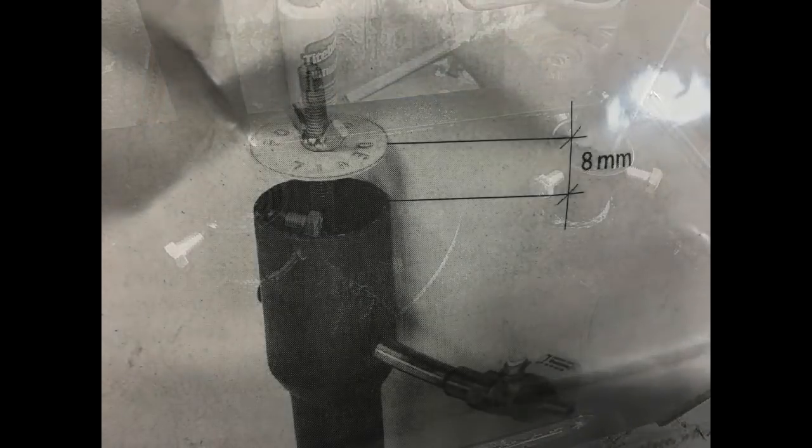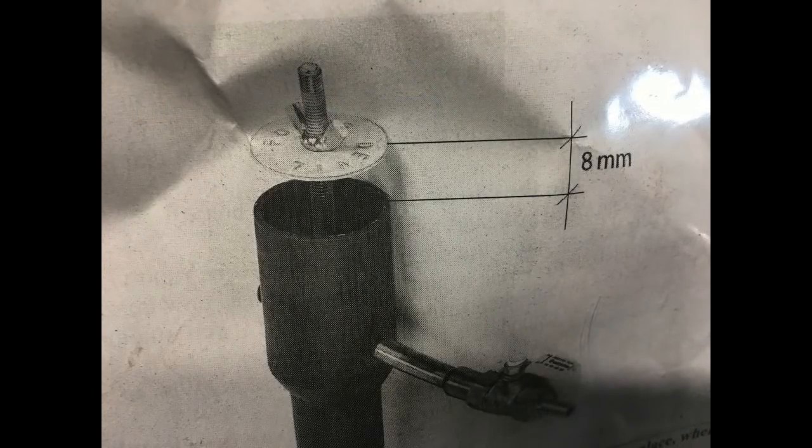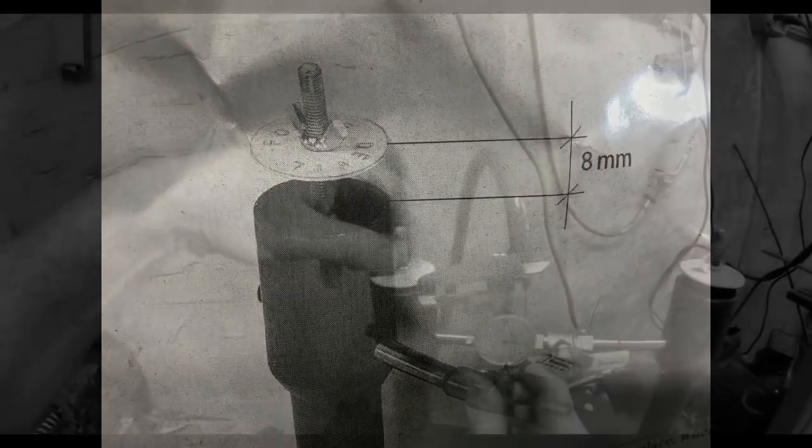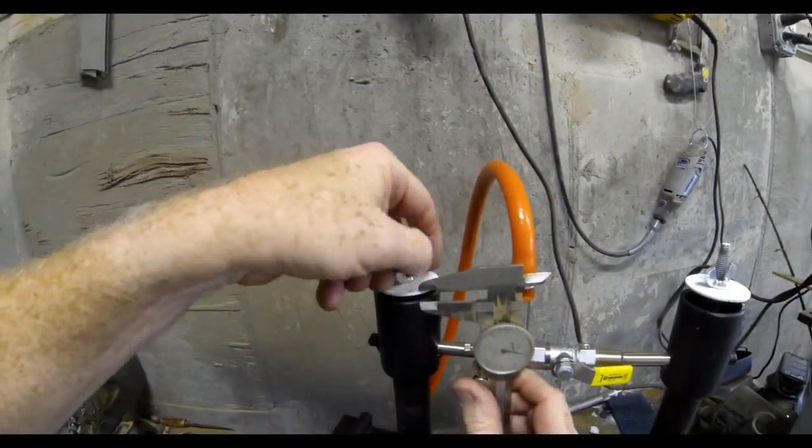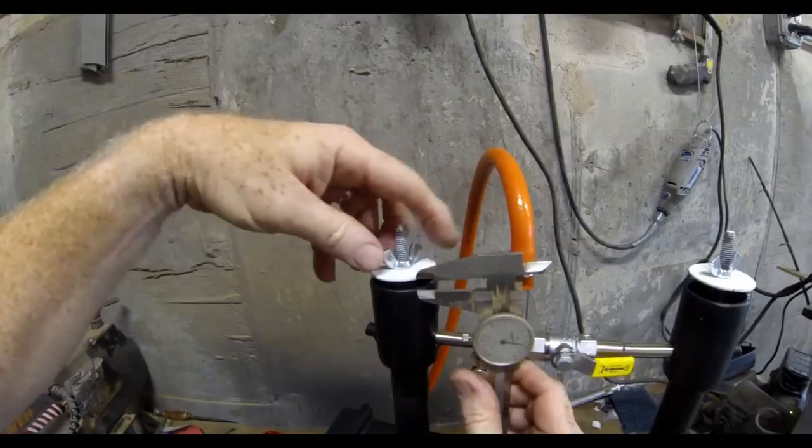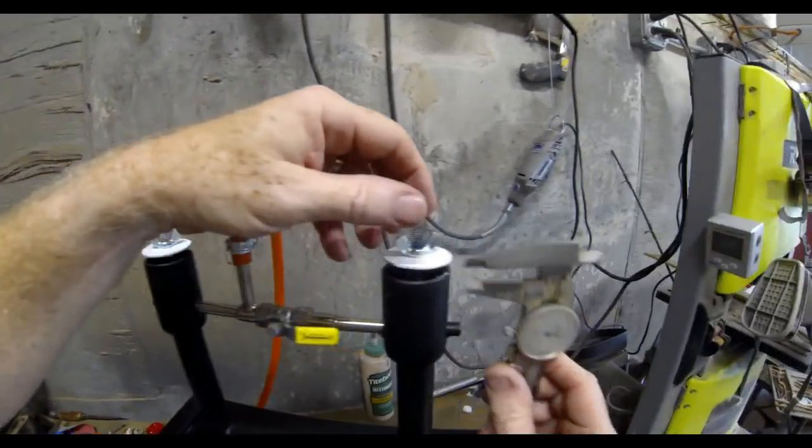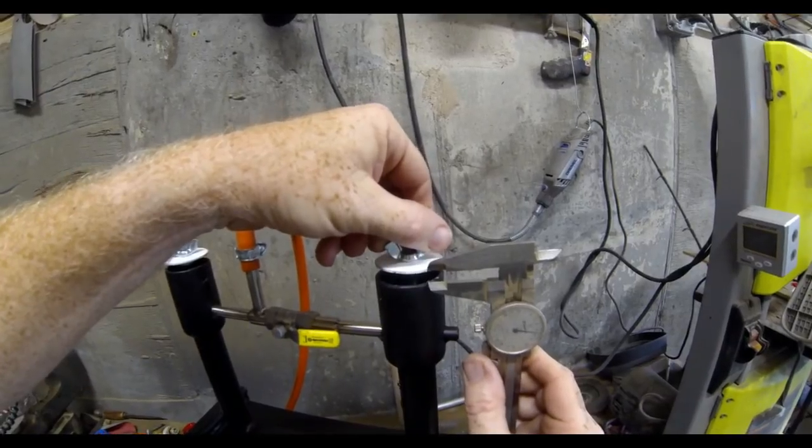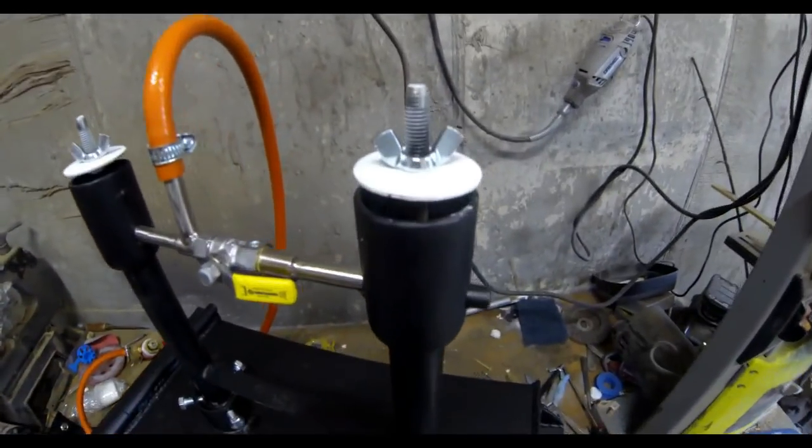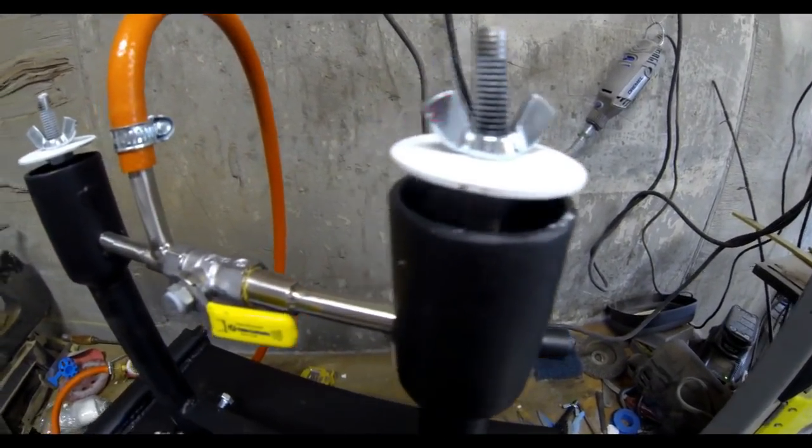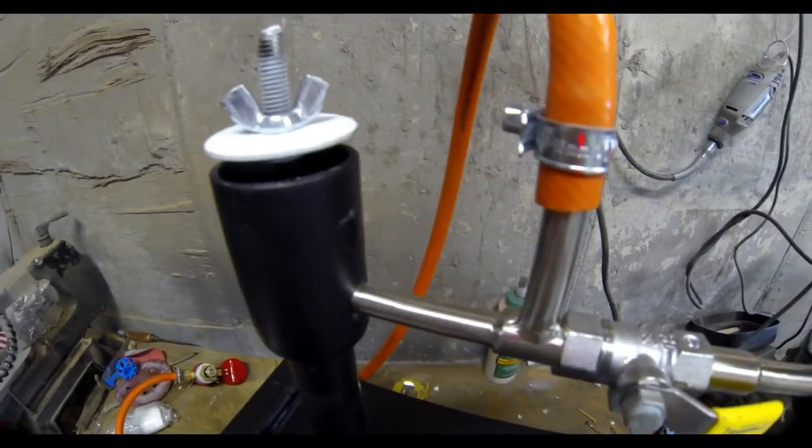Now, the choke is on top of each one of those tubes. They recommend about eight millimeters of space. This is not a critical dimension. Basically you just want to leave, you know, quarter inch or more to begin with. And then you can adjust this once you get the forge started.